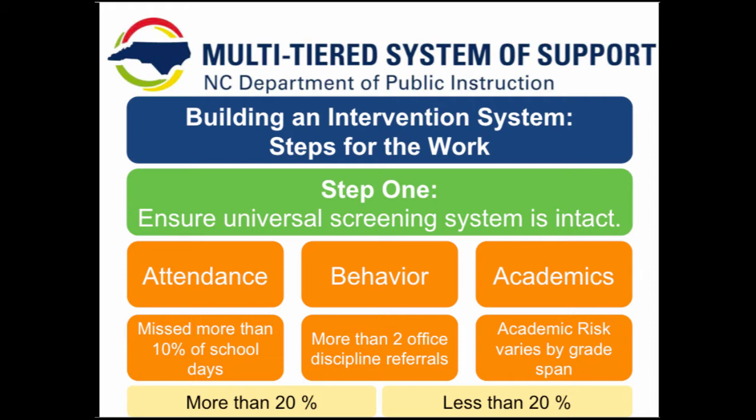A universal screening system should include information on student attendance, behavioral data, and academic performance. We have strong national recommendations on indicators of risk for each area. We will walk through the recommendations on use of each of these areas in a comprehensive universal screening system. You may have heard this type of data collection and analysis referred to in the secondary setting as an early warning system.